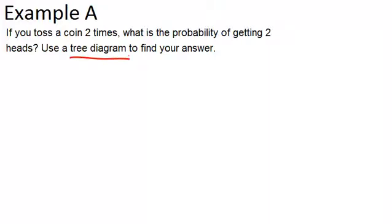So the tree diagram is a way to organize all the possible outcomes that could happen when you flip a coin two times. We want to think about what happens first. Well, you start out and you flip the coin once and there are two possible outcomes.